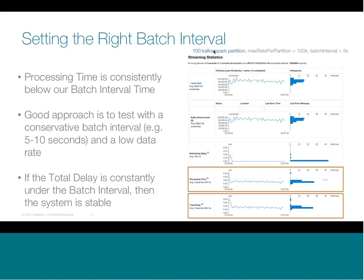What we want to do is either adjust your batch sizes or adjust your processing time so that you don't have these scheduling delays. A good approach is to test with conservative batch intervals — say around five seconds and a low data rate — starting at the smaller end and verifying whether your system can keep up. Then check the end-to-end delay experienced by each batch. If the delay stays comparable to the batch size, then the system is stable. In this example, our batch windows were five seconds, the processing time was three seconds, and so our total delay stayed around three seconds — no growing backlog.